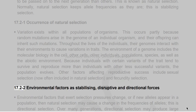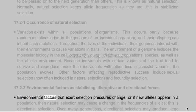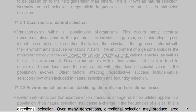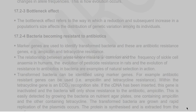Environmental factors that exert selection pressures, or if new alleles appear in a population, can cause natural selection to change the frequencies of alleles — this is directional selection. Over many generations, directional selection may produce large changes in allele frequencies. This is how evolution occurs.